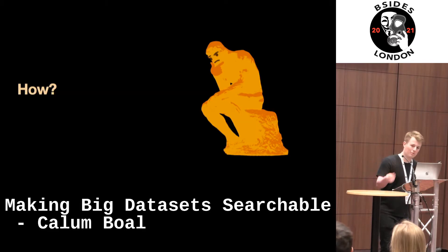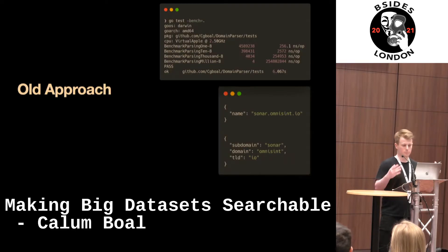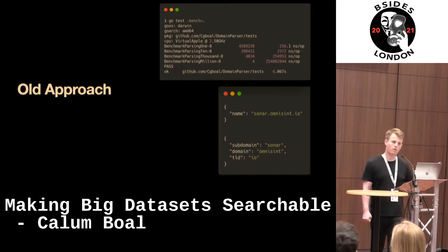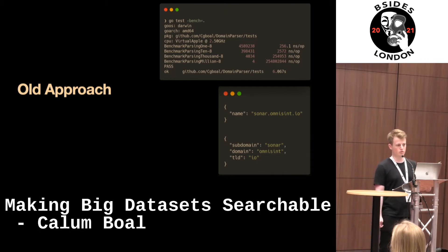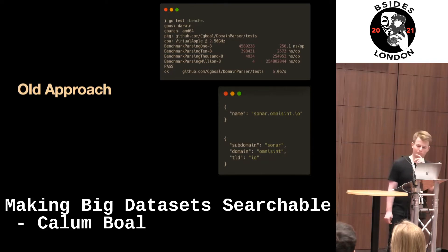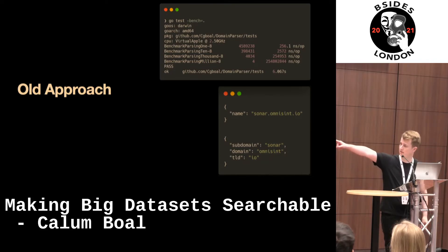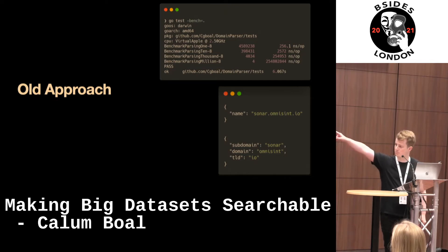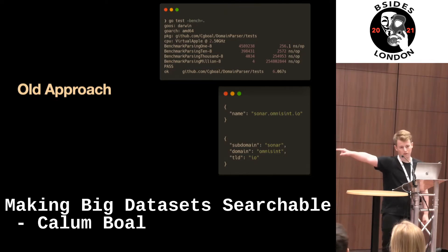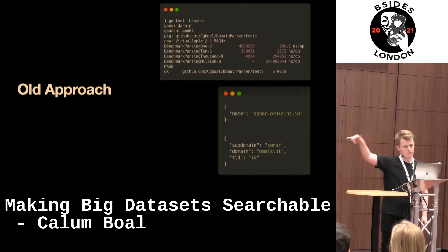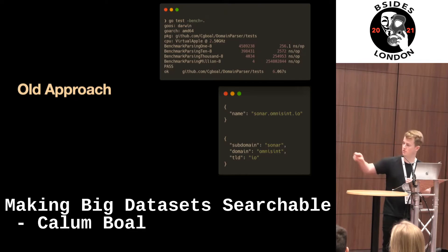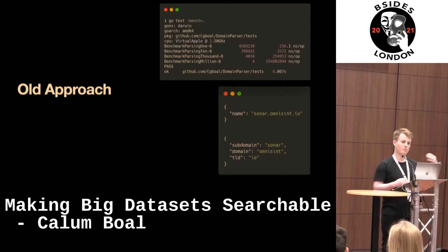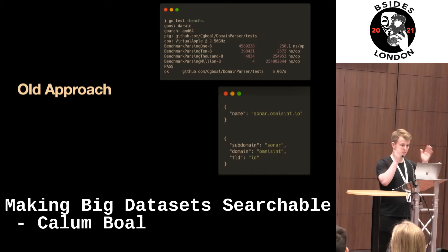Now let's talk about how this is done. The old approach, which I had running in production for quite a while until it started to degrade badly under load: you take a domain name and split it into components. That lets you put it in MongoDB, or any kind of database, and do a full string index on the data, as opposed to a full text search. You do a composite index on the domain and the TLD, which allows for very fast querying because you're matching an exact value rather than doing substring searches.